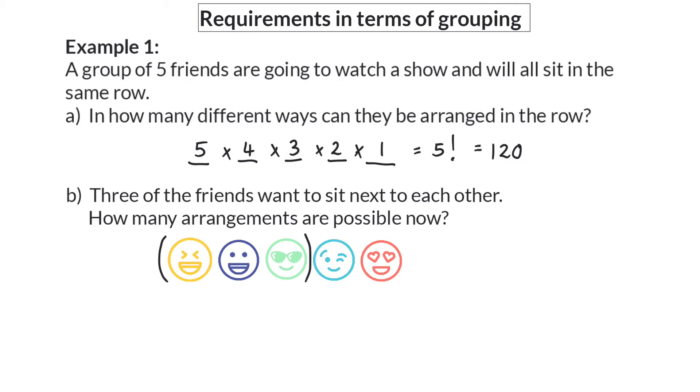Firstly we are going to see those three friends as one big task because they want to sit next to each other and that means we now have three tasks. We already know that three tasks can be arranged in 3 factorial ways which will give us six different arrangements.